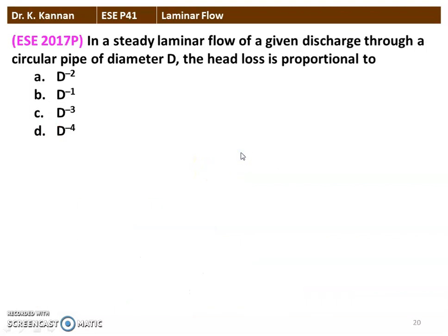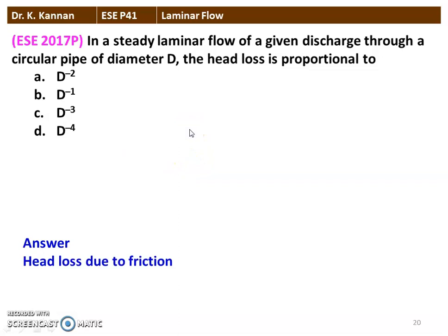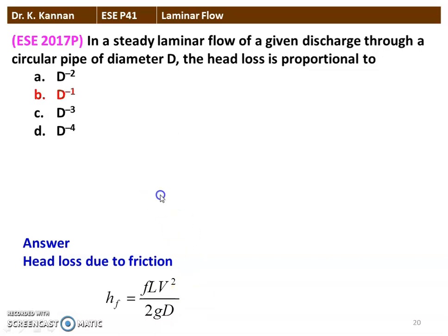The next question from the 2017 question paper: In a steady laminar flow of a given discharge through a circular pipe of diameter D, the head loss is proportional to D to the power of minus 2, minus 1, minus 3, or minus 4? The head loss due to friction is given by HF = fLV²/2gD, where D is in the denominator. Therefore, head loss is directly proportional to D to the power of minus 1.